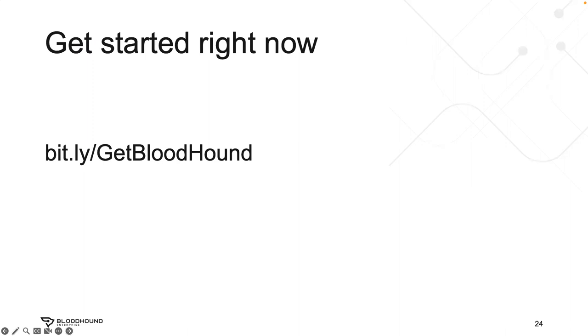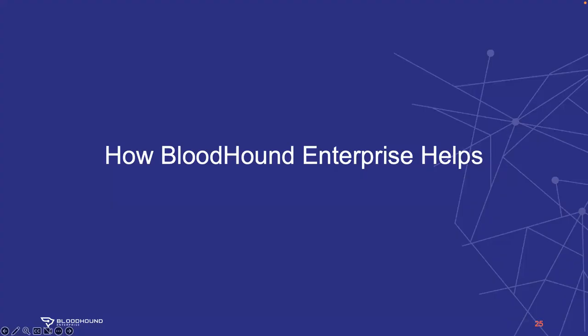If you are ready to get started with Bloodhound, you can get it at bit.ly/get-Bloodhound. I'm going to be talking about Bloodhound Enterprise next, so if you're interested in that, please stick around. Bloodhound Enterprise will do data collection, scheduling, automation, and all that kind of stuff for you — data collection is kind of set-it-and-forget-it with Bloodhound Enterprise.